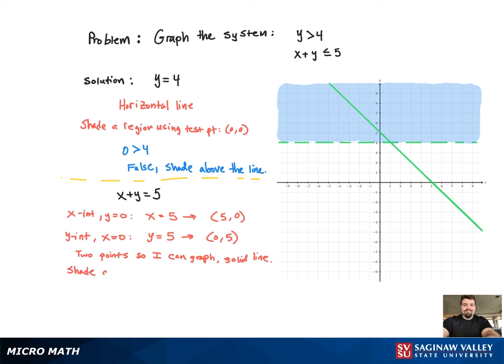Now we need to shade a region either above the line or below the line. To figure that out, we're going to use a test point. Again, a very convenient point to use is 0, 0. When we plug that in, we get 0 less than or equal to 5, which is true. So we're going to shade the region that has 0, 0 in it, which is below the line.